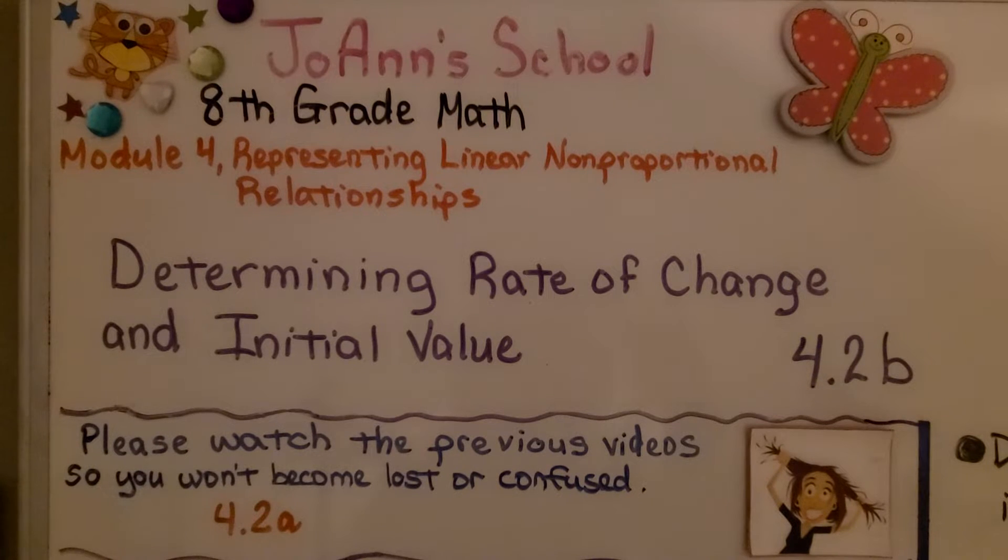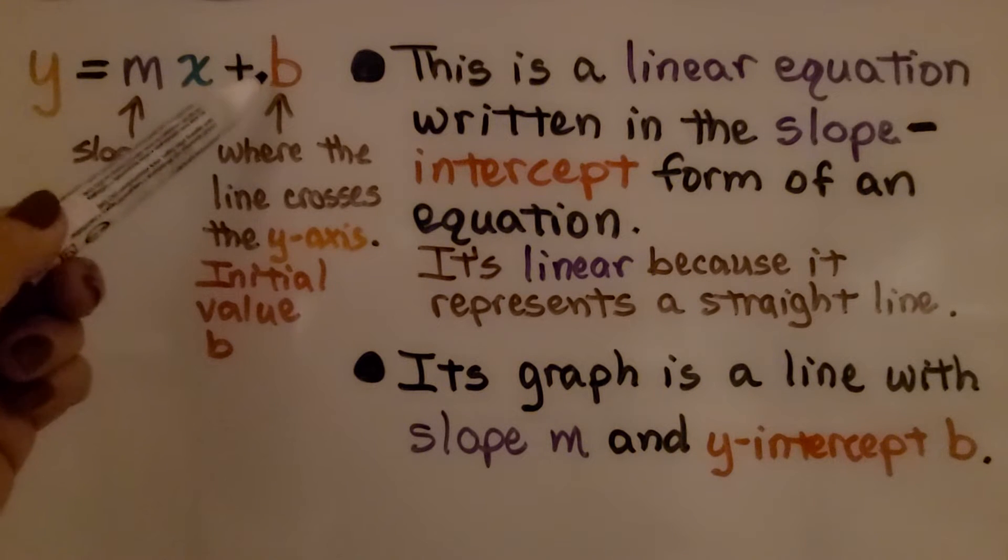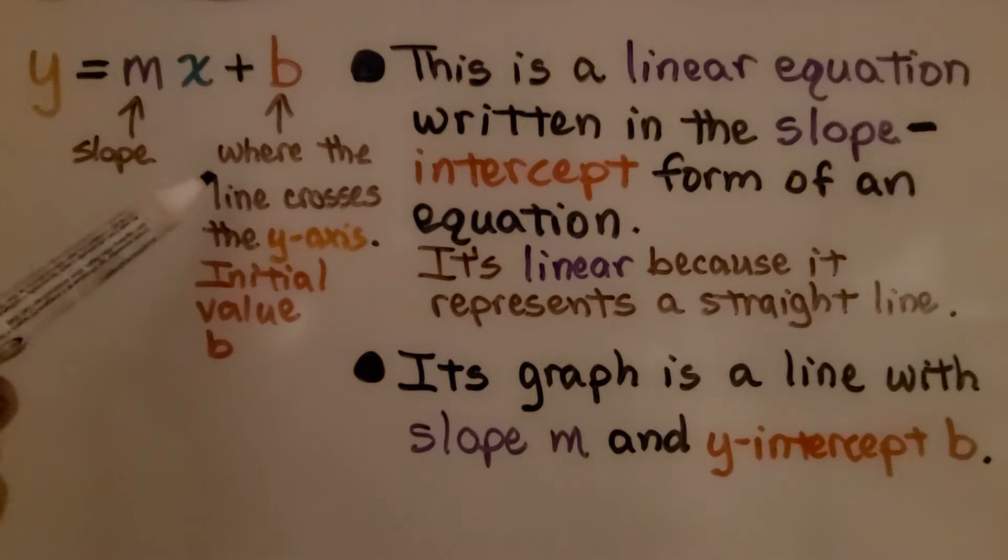Determining Rate of Change and Initial Value. This is Lesson 4.2b. This is a linear equation written in the slope-intercept form of an equation. It's linear because it represents a straight line. Its graph is a line with slope m and y-intercept b. The m represents the slope. This b is where the line crosses the y-axis. It's the initial value b, the y-intercept b.